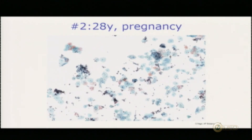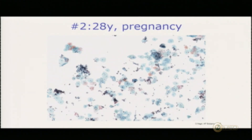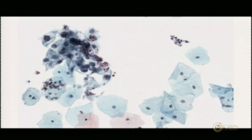So we have a similar situation again — it's a pregnancy. That is really particular. The woman is 28 years old. And this is a low magnification view. You can see it's actually a relatively clean pap test. There are just a few leukocytes, and then you have those cells. If you look at higher magnification, we find those cells. And at even higher magnification, we find this.